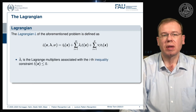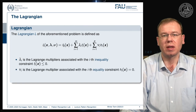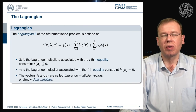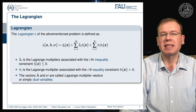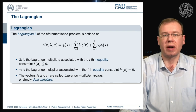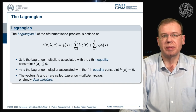Lambda and nu are the Lagrange multipliers — lambda for the inequality constraints and nu for the equality constraints. This new set of vectors, lambda and nu, are also called the dual variables, and this is the step towards the dual problem.